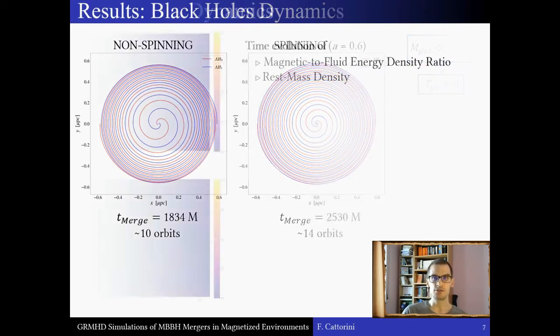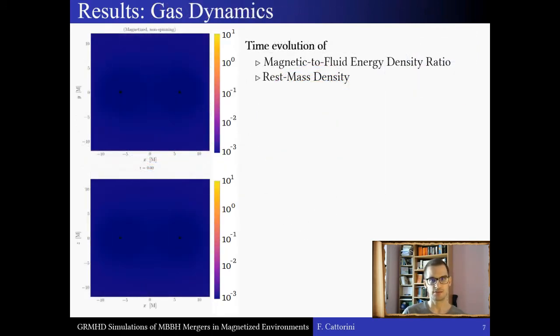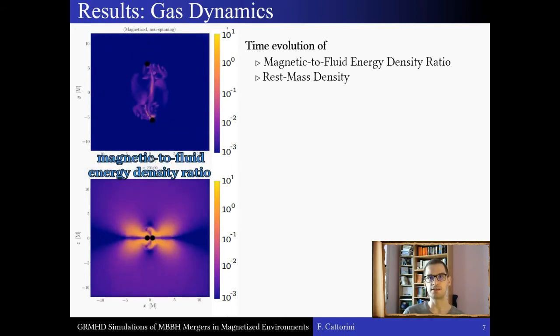Here, we turn to the study of the gas surrounding the binaries. In this 2-dimensional movie, you will see the values of the magnetic to fluid energy density ratio for a non-spin run. This gives the extent of the magnetization of the plasma. On the top panel, we show the values on the orbital plane, xy, and on the bottom panel, the values on the normal plane, xz.